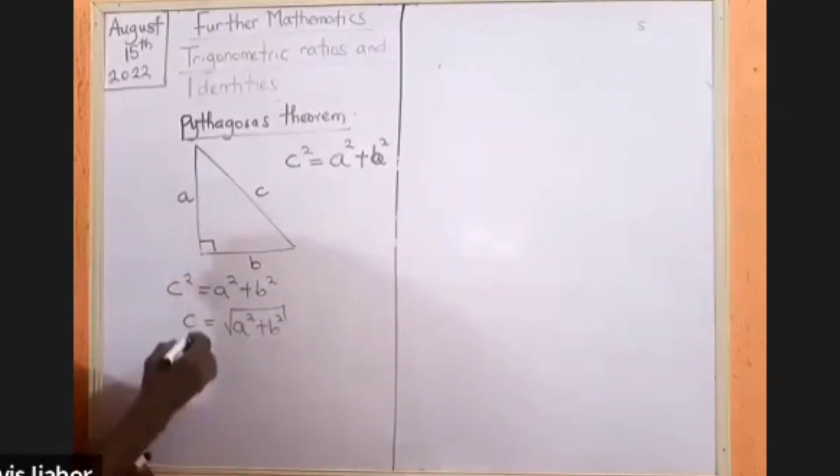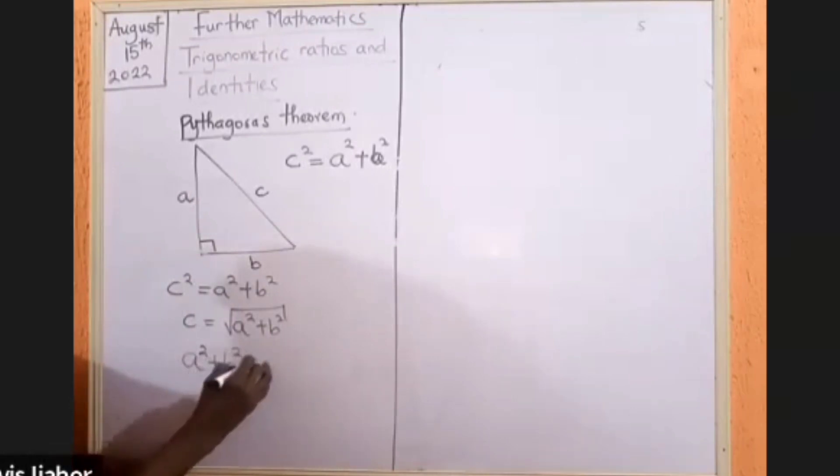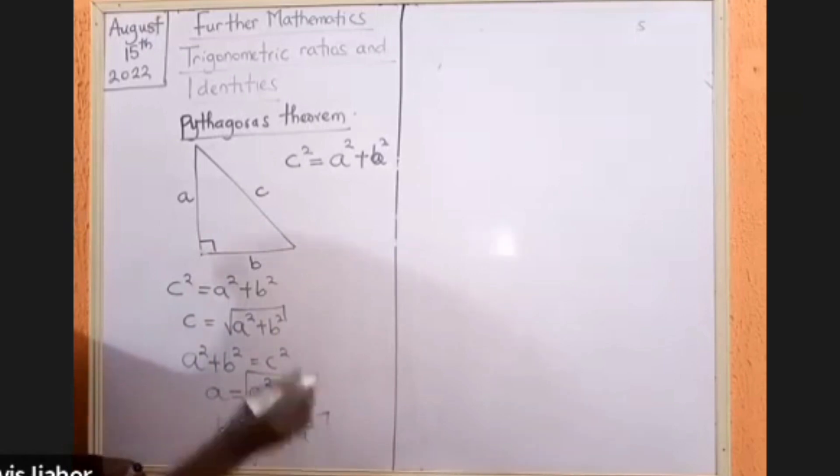From here I can say that a squared plus b squared is equal to c squared, meaning that a will be equal to the square root of c squared minus b squared. And by that implication, b will be equal to the square root of c squared minus a squared. This idea is very important.